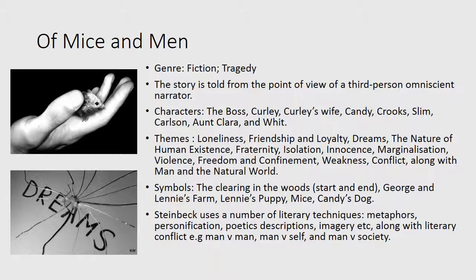Steinbeck also offers a number of symbols, most notably the clearing in the woods which appears at the start and end of the book, also George and Lenny's farm, Lenny's puppy, Lenny's mice, and Candy's dog. Steinbeck uses a number of literary techniques: metaphors, personification, poetic descriptions, imagery, and animal imagery which is quite prevalent in the text, along with literary conflict — for example, man versus man, man versus self, and man versus society.